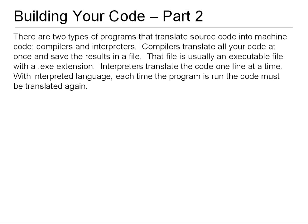There are two types of programs that translate source code into machine code: compilers and interpreters. Compilers translate all your code at once and save the results in a file — usually an executable file with a .exe extension. Interpreters translate the code one line at a time, and each time the program is run, the code must be translated all over again.